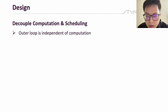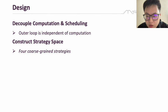Next, we highlight another important capability of our abstraction: decoupling computation and scheduling. This feature allows us to construct a strategy space.